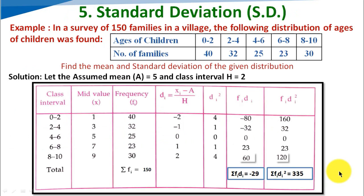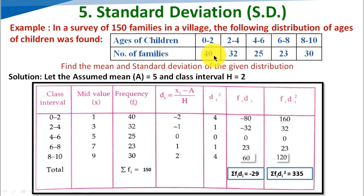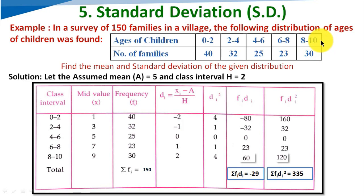For the second example with continuous data and frequency distribution: in a survey of 150 families in a village, the distribution of ages of children was found. There are 40 families where children's age is between 0 to 2, 32 families with age between 2 to 4, and likewise 30 families with children's age between 8 to 10. We need to find the mean and standard deviation.